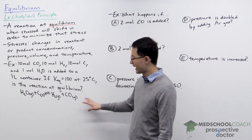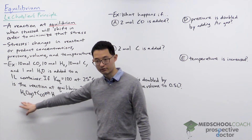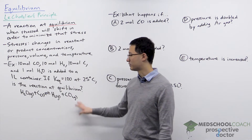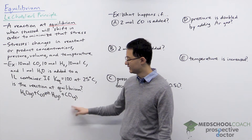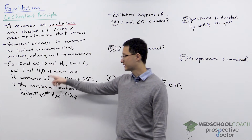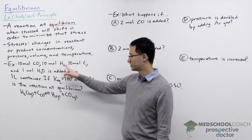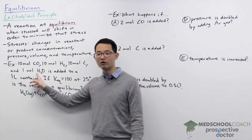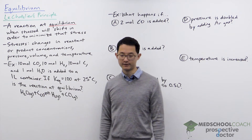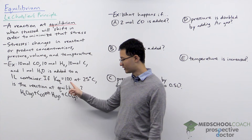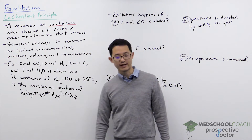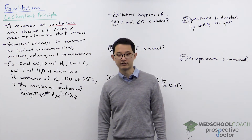The best way to understand Le Chatelier's principle is to take a look at an example. Here we have this reaction: water plus carbon gives us hydrogen gas and carbon monoxide. The situation is we're adding 10 moles of carbon monoxide, 10 moles of hydrogen, 10 moles of carbon, and 1 mole of water to a 1-liter container. If the equilibrium constant K is 100 at 25 degrees Celsius, is this reaction at equilibrium?